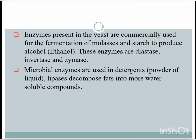Enzymes present in yeast are commercially used for the fermentation of molasses and starch to produce alcohol. Alcohol — based on ethanol, which has two carbons and one OH (hydroxyl) group — is the main product of this fermentation. These enzymes are diastase, invertase, and zymase. Microbial enzymes are also used in detergent powders and liquids, where lipases decompose fats into more water-soluble compounds.